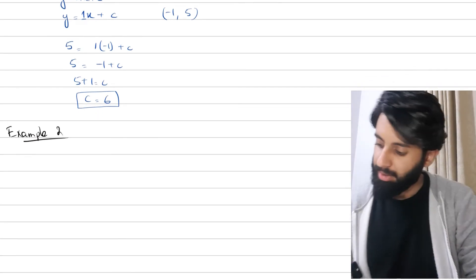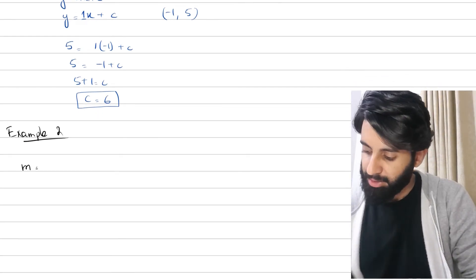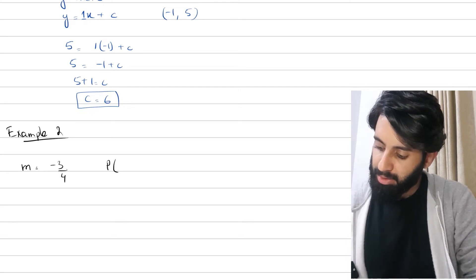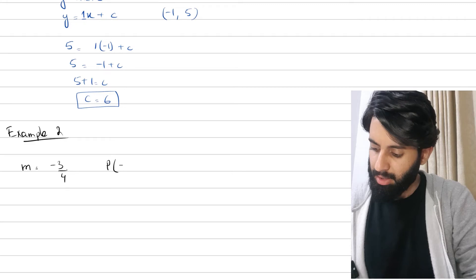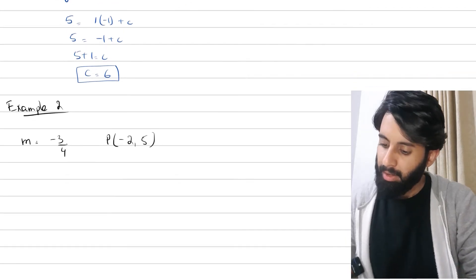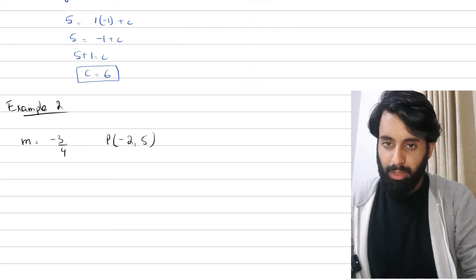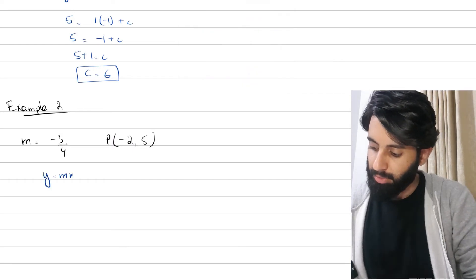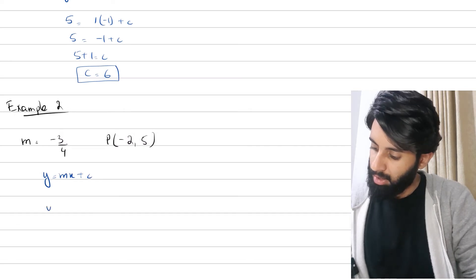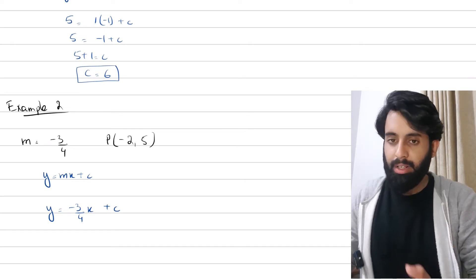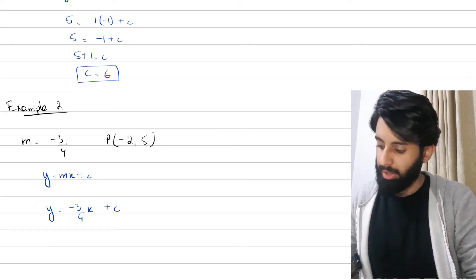Let's do another example. In this case, instead of two points, we are given the gradient, which is −3/4, and we're given a point through which the line is passing, which is (−2, 5) — just random values. The first thing we can figure out is that the general form is y = mx + c, so we can replace m with −3/4 straight away without plugging coordinates into a gradient formula.